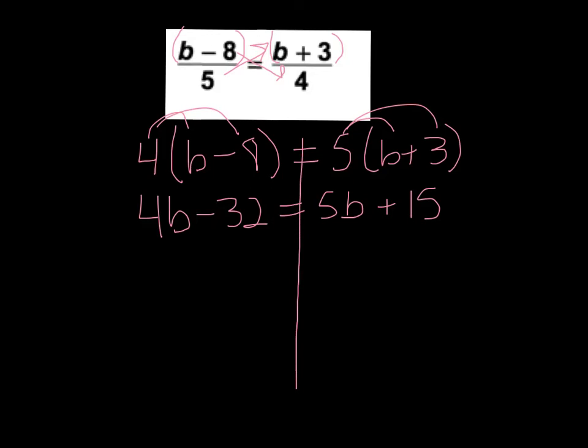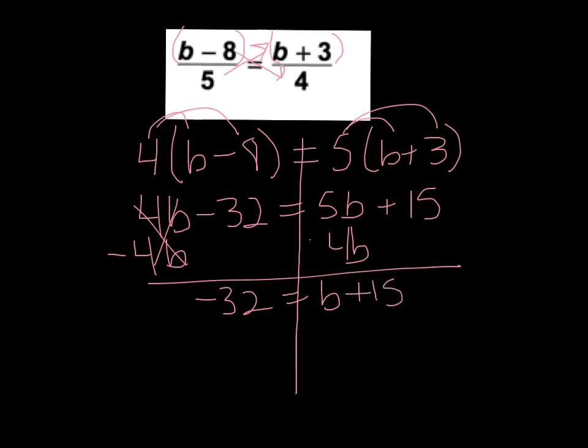All right, I'm going to move the 4b over, just because it's smaller and I don't want to have negatives. So I'm going to subtract 4b. Those go away. I have negative 32 equals 5b minus 4b is 1b plus 15.